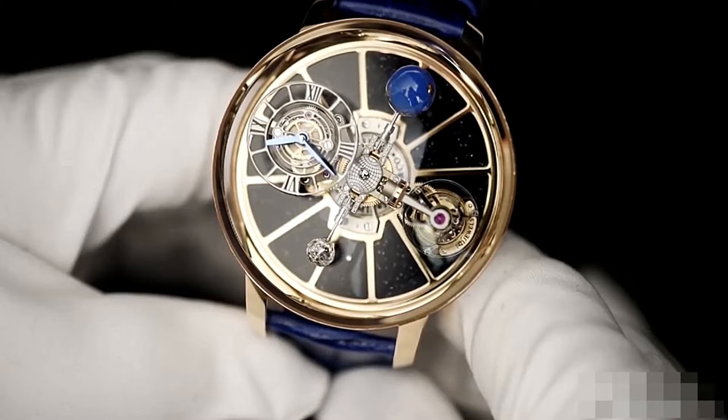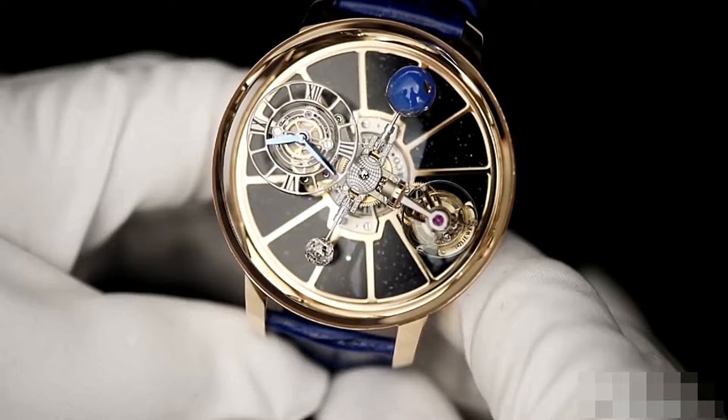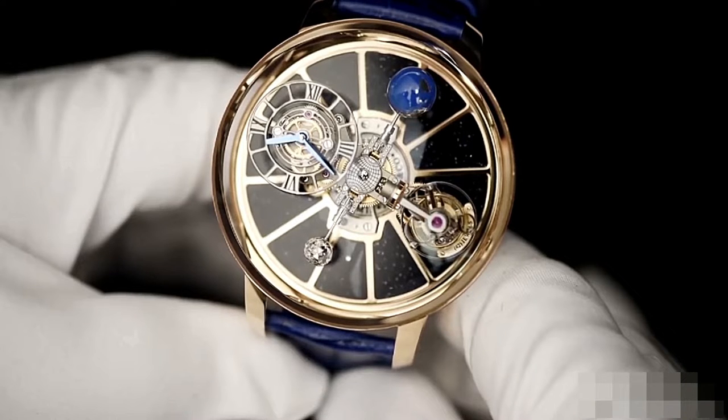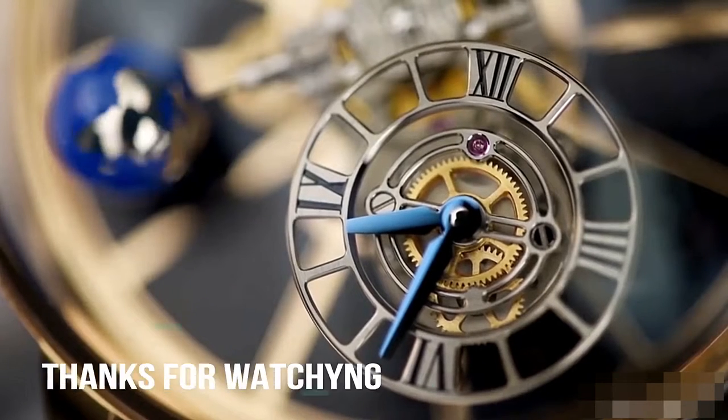The Astronomia tourbillon has four satellite arms hypnotically rotating around the dial. One of the four is the time indicator, which rotates around the circumference of the dial every 20 minutes.